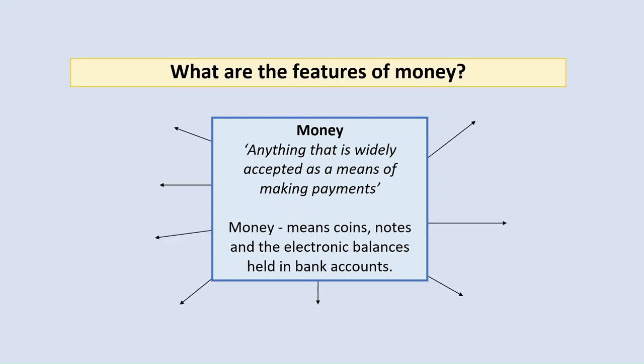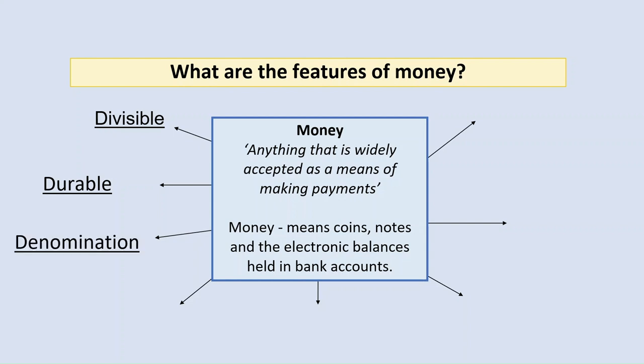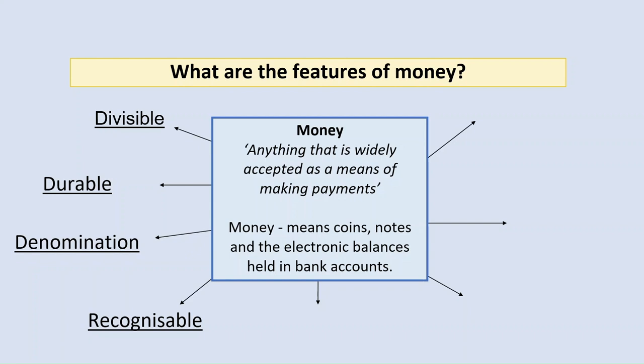But what are the features of money? Well, money has to be divisible — we have to be able to split it into smaller amounts in order to buy smaller items. It has to be durable, i.e. it has to survive the test of time and maintain its value and not be perishable — you can't use a banana or orange as a form of money because it will go off and perish over time. It needs to come in denominations, and it also needs to be recognisable — other people need to recognise it as money in order for it to function as money. It needs to be scarce, but it needs to be sufficient.